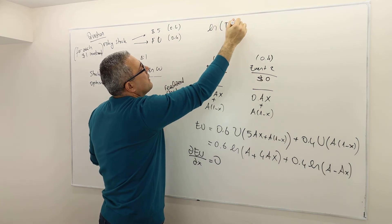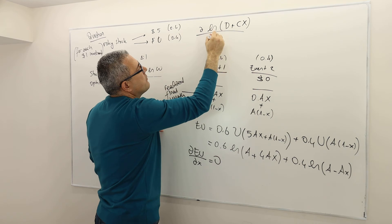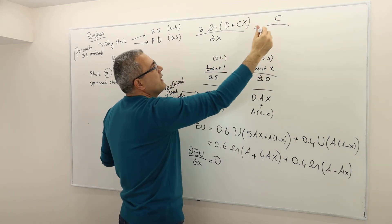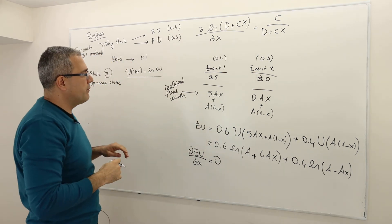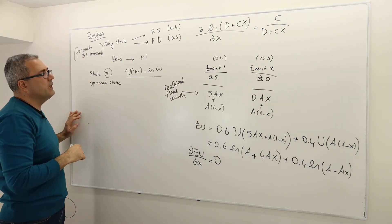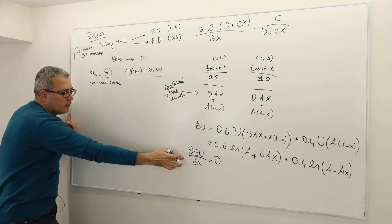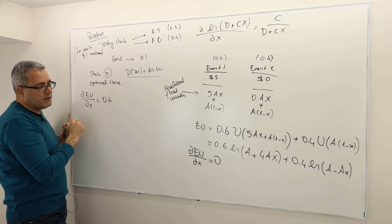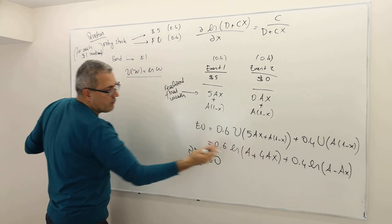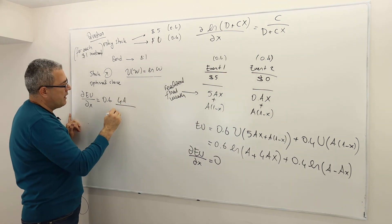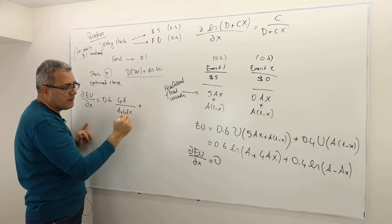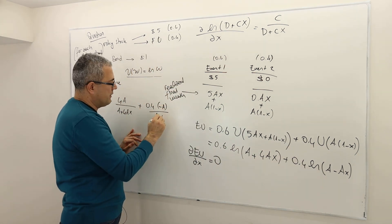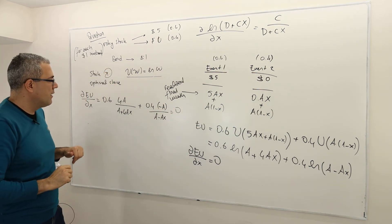If I have a function something like ln(D + CX) and I'm taking the partial derivative with respect to X, we know that this is the derivative of inside, which is C, divided by the inside term D plus CX. Just remember this, that's the only information you probably need to solve this equality. Therefore, ∂EU/∂X equals the following: 0.6 times the derivative of this guy with respect to X is 4A divided by A plus 4AX, plus 0.4 derivative of this guy is minus A divided by A minus AX. Set it equal to zero.